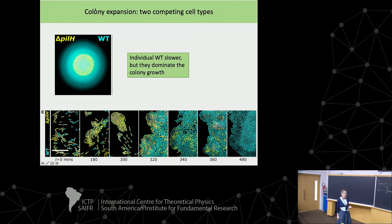Looking at a mixture and the front of the colony, you can see that to start with you definitely get more yellow ones — the fast ones — at the edge of the colony. But at later times the slow ones are taking over and getting further. So that's saying the same thing in a slightly different way.